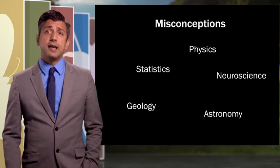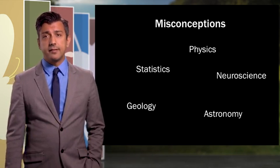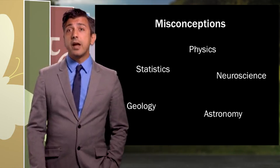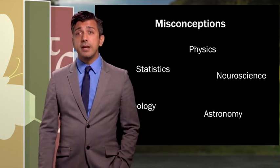We see misconceptions in neuroscience about the brain. For instance, the idea that the left brain is more linear and the right brain is more creative.